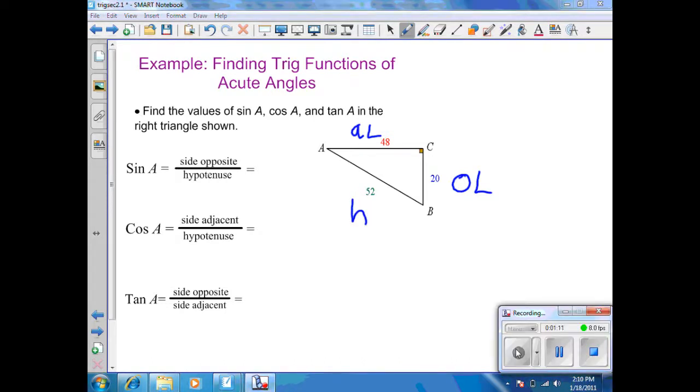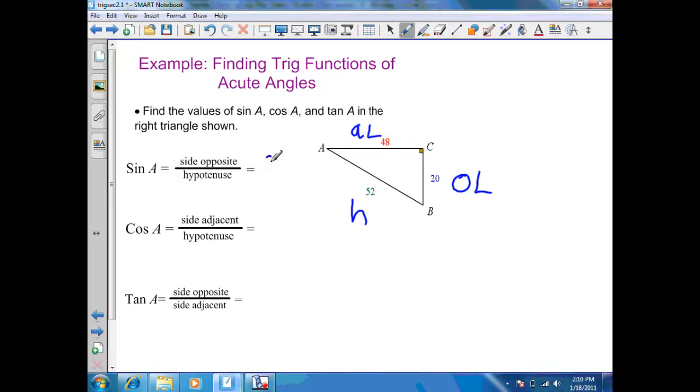Now, all I need to do is substitute into my given formulas and simplify the problem. Sine of A, side opposite or opposite leg, is going to be 20 over hypotenuse, which is 52. When I simplify, that's going to give me 5 over 13.